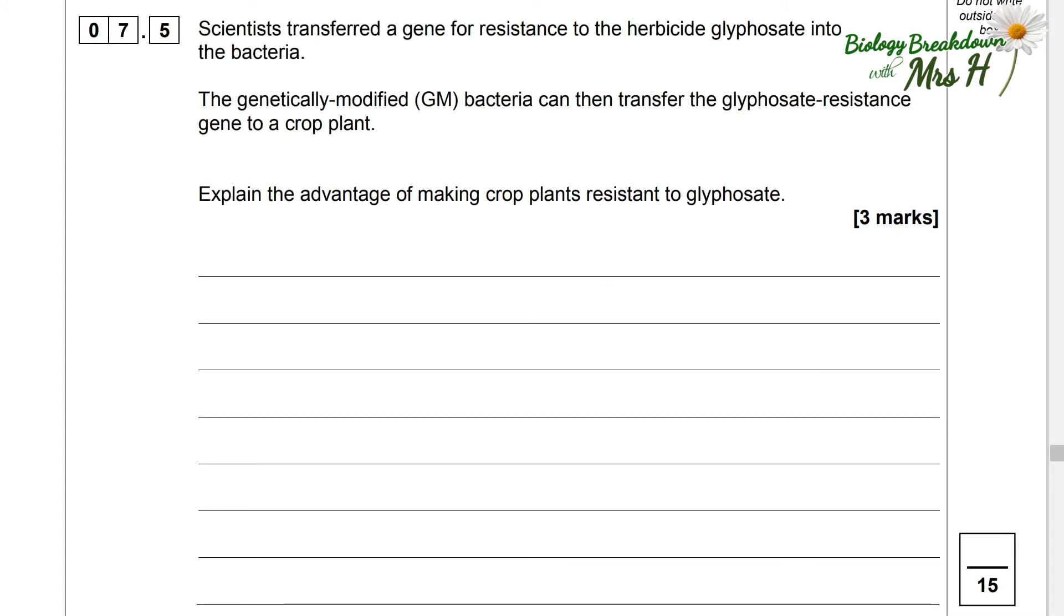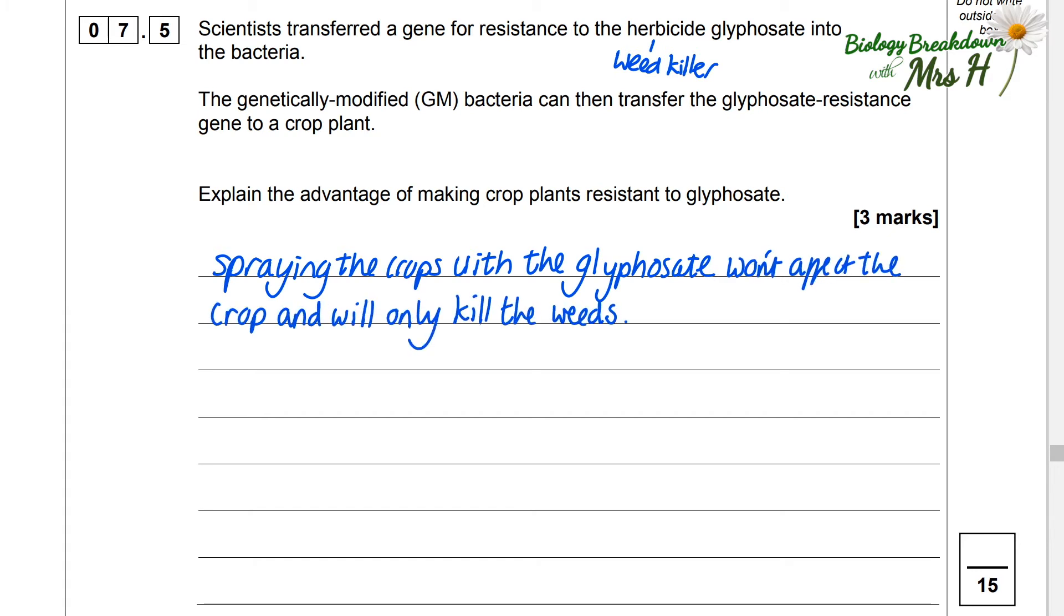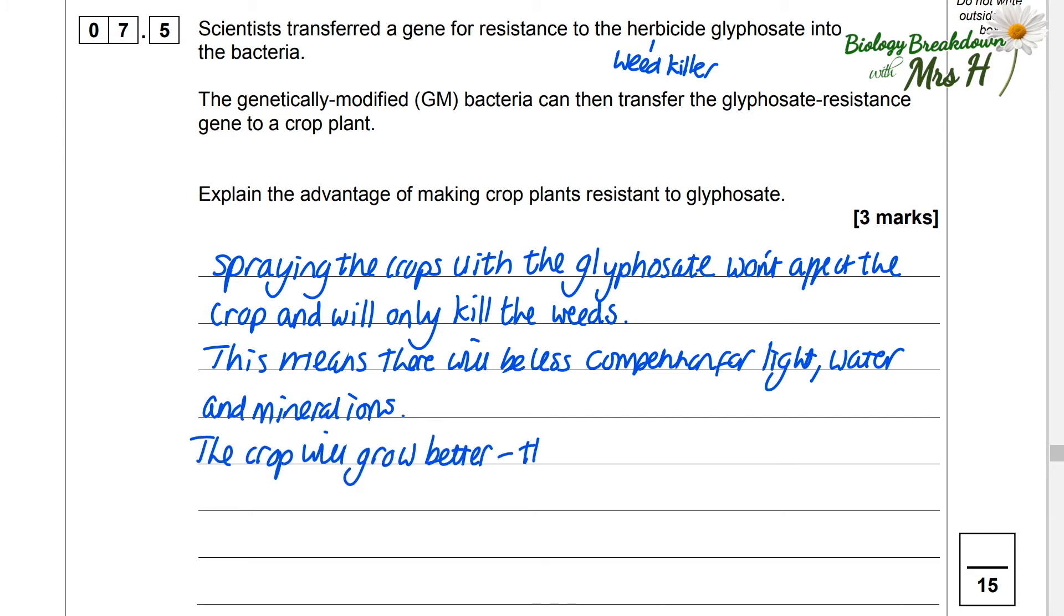Scientists transferred a gene for resistance to the herbicide glyphosate into the bacteria. The genetically modified GM bacteria can then transfer the glyphosate resistance gene to a crop plant. Explain the advantage of making crop plants resistant to glyphosate. Well if you spray the crops with the glyphosate it won't affect the crop and it will only kill the weeds as herbicide is a weed killer. This means there will be less competition for light water and mineral ions because weeds will be killed so they're not going to absorb and take those nutrients from the soil and the crop will grow better so there will be more yield.